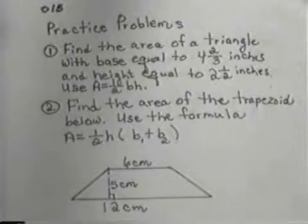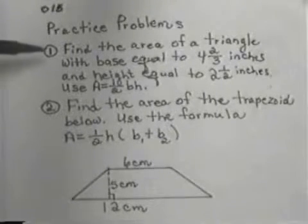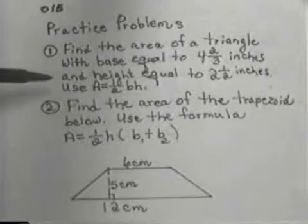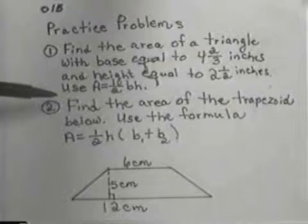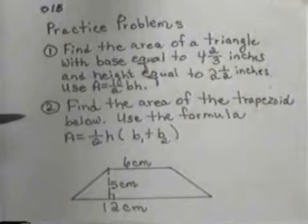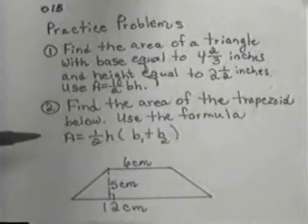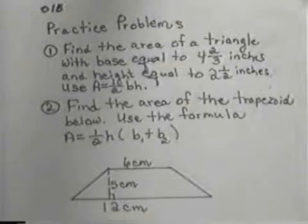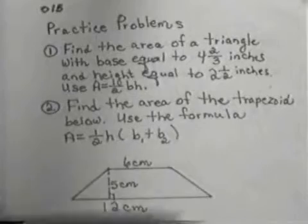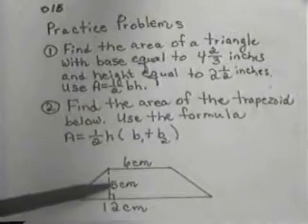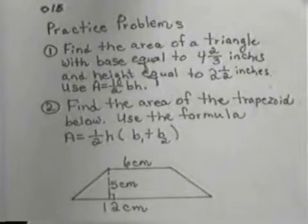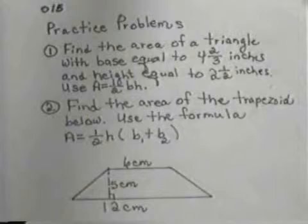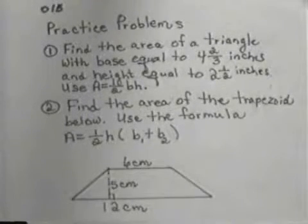Now I'd like for you to do some problems. The first problem, find the area of a triangle with base equal to 4 and 2 3rds inches, and height equal to 2 and 1 1⁄2 inches. Use A equals 1 half BH for your formula. And then, the second one, find the area of the trapezoid below. Use the formula A equals 1 half H times the sum of B1 plus B2. And then you can see your figure. This is 6 centimeters, 5 centimeters, 12 centimeters. So if you'll copy those problems down, once you get them copied down, cut the tape off and work them. When you think you have them correctly, cut the tape back on to check your answers.